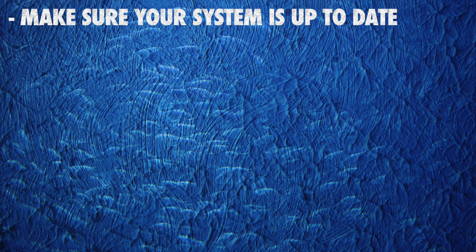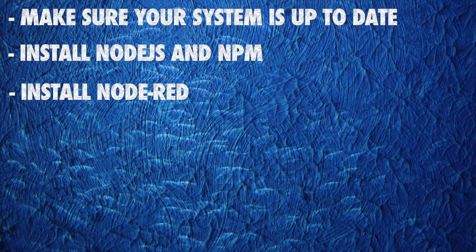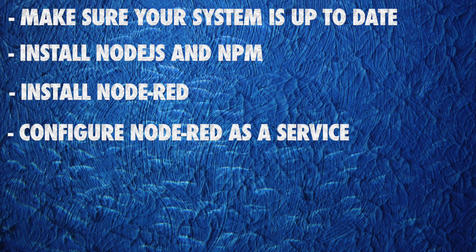Let's do a quick run-through of everything we're going to cover in this video. As always, I like to make sure my system is up to date. Once we do that, we're going to install some prerequisites — Node.js and npm. Once we have those installed, we're ready to install Node-RED. After we install it, I'm going to configure Node-RED as a service so it'll automatically start.